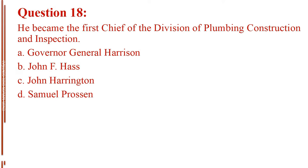Question number 18. He became the first chief of the Division of Plumbing Construction and Inspection. Letter A, Governor General Harrison. Letter B, John F. Haas. Letter C, John Harrington. Letter D, Samuel Prowson.